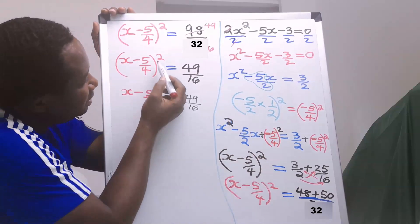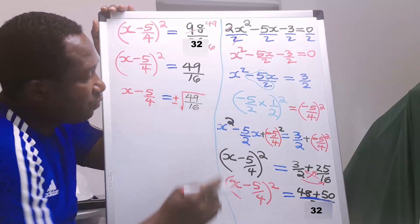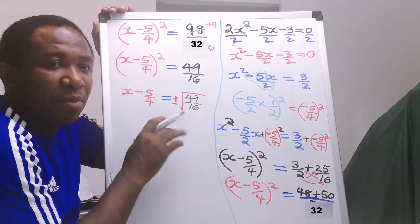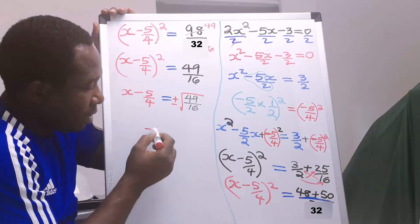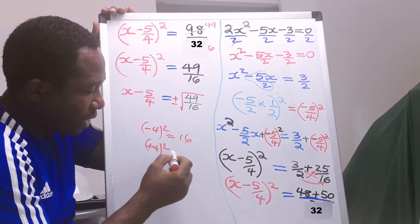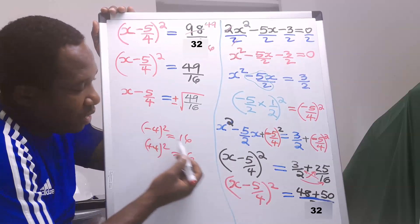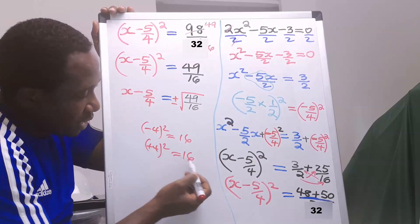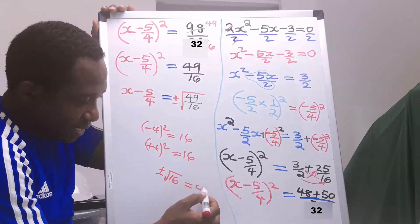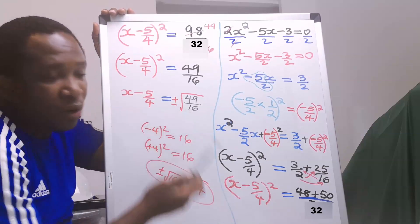Next, this square will move and become plus or minus the square root of 49 over 16. The plus or minus is because a perfect square root can be plus or minus. For example, minus 4 squared gives 16, and plus 4 squared also gives 16. So we say plus or minus square root of 16, because at the end we get 4. That is why in quadratic equations and functions, we normally use plus or minus.